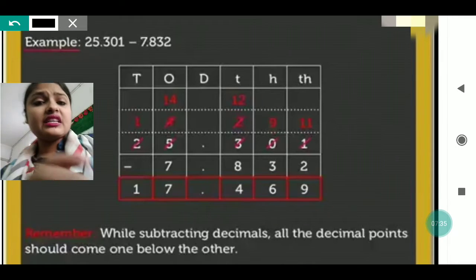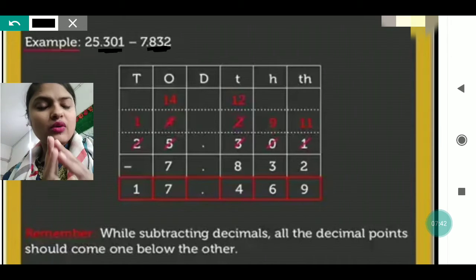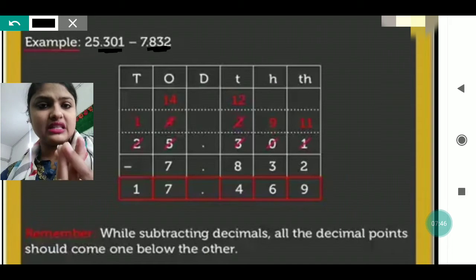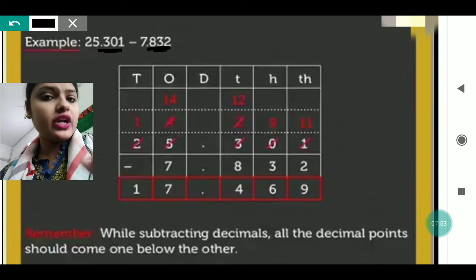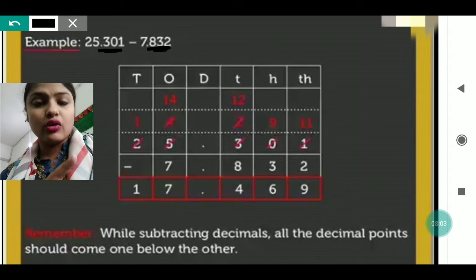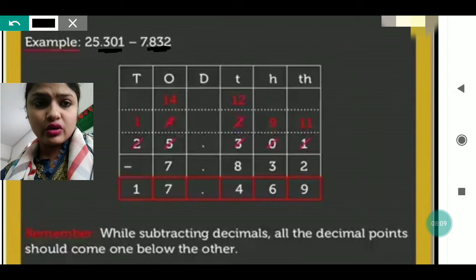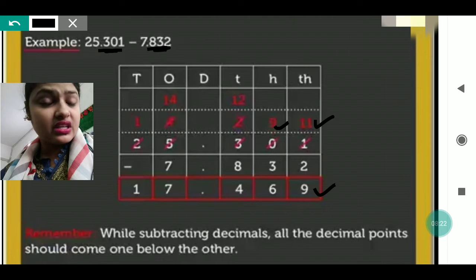In this next question, there are three decimal digits in both numbers, so there is no need to put zero — they are already like decimals. One minus two is not possible; the nearby number is zero so it cannot give carry, so it goes to the next number. Three gives one to zero, making it ten. Then one takes carry from ten, becoming eleven, and that becomes nine. Eleven minus two gives nine, then nine minus three gives six.